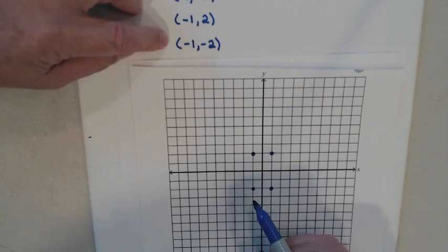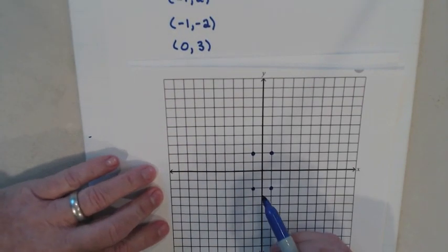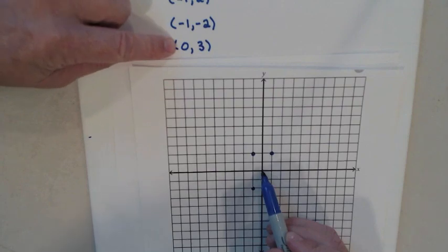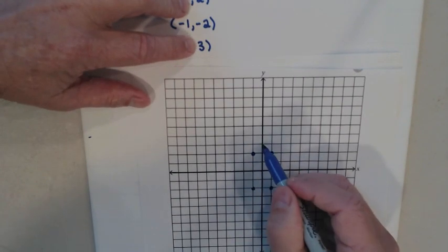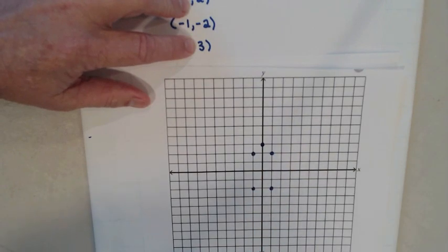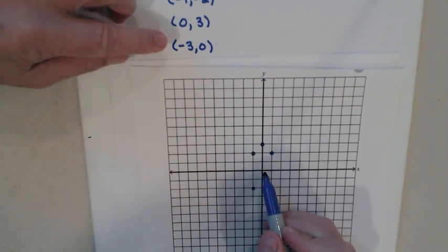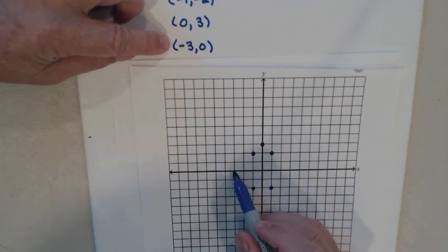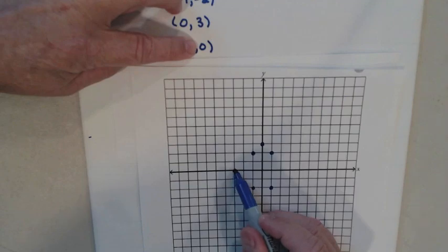The first number tells me to go forward or backwards; the second number tells me to go up or down. Next example: I start at the origin. The first number is zero, so it doesn't tell me to go over any — I don't move yet. My second number is positive, so I go up: one, two, three. There's that point. Next: I start at the origin, and my first number tells me to go backwards three. The second number is zero, so I don't go up or down — I put the point right there.